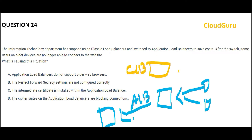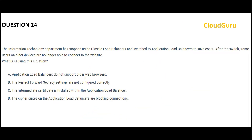The website is somewhere here and the ALB comes in between — this is how the end user will reach the website. The first option says there is an old web browser, hence this is a problem. But if the browser is old, it will not give you connectivity issues; it will show you compatibility issues or something of that sort. It will not prevent you from connecting altogether. So A is wrong.